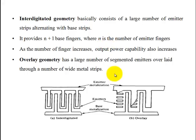Overlay geometry has a large number of segmented emitters laid through a number of wide metal strips. The emitter's metal strips overlay the base metallization. The figure shows the segmented type emitter with metal strips overlaying the base.